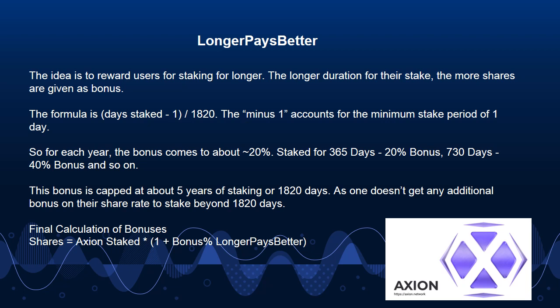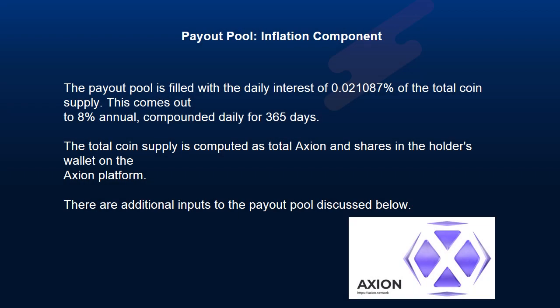Final Calculation of Bonuses. Shares equals Axion staked multiplied by (1 plus bonus percent from Longer Pays Better). Payout Pool — Inflation Component. The payout pool is filled with the daily interest of 0.021087% of the total coin supply. This comes out to 8% annual, compounded daily for 365 days. The total coin supply is computed as total Axion and shares in the holder's wallet on their Axion platform. There are additional inputs to the payout pool discussed below.